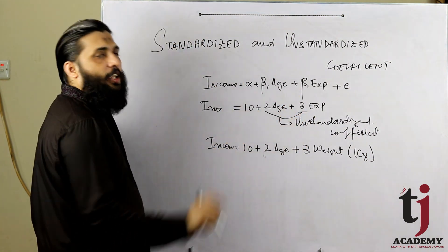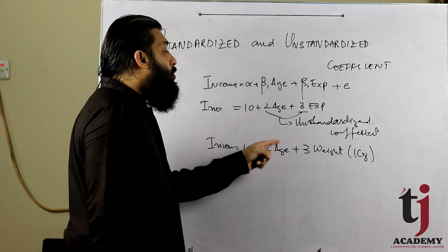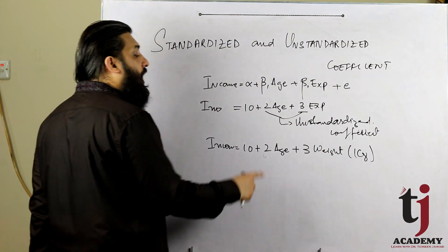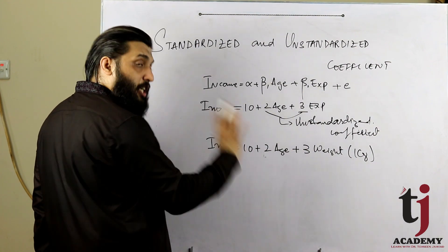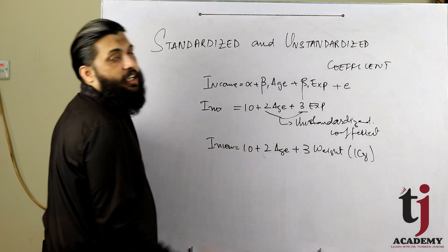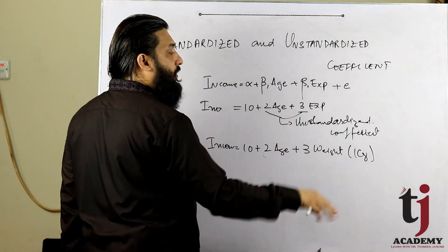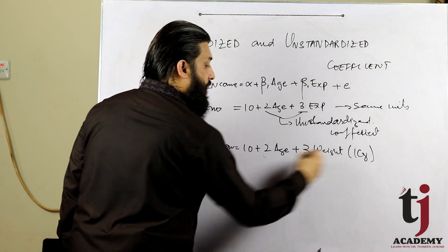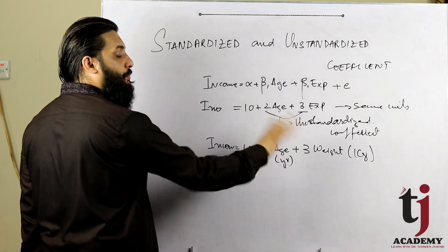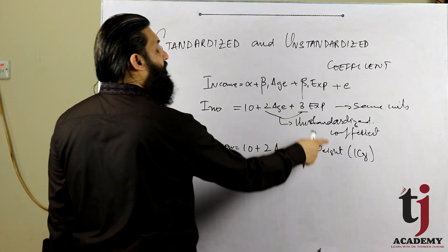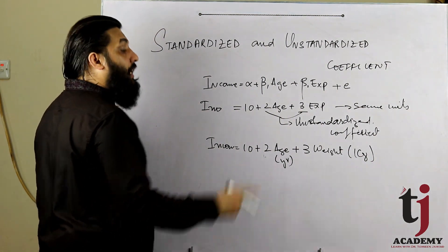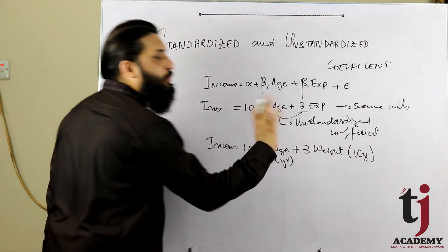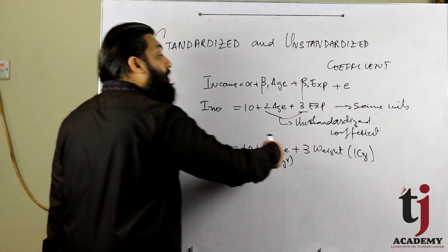You cannot compare independent variables when their units are different. To compare, we work with the standardized coefficient. If the units are not the same — for example, air and kilogram — you cannot interpret or compare them directly. You can say weight increases by one unit keeping other factors constant, but comparing age and weight is not valid because their units — kilogram and age units — are not comparable.